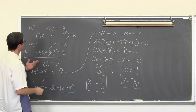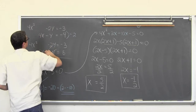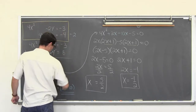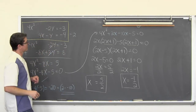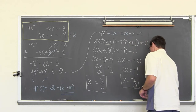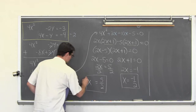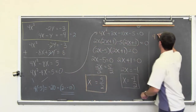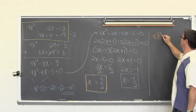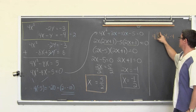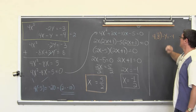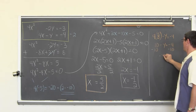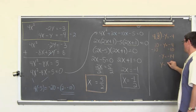We are going to plug those x values into one of the original equations. Using the second equation with x equals five halves: four times five halves minus y equals negative four. Four times five halves is ten, so ten minus y equals negative four. Subtracting ten from both sides: negative y equals negative fourteen, meaning y equals positive fourteen. So the first coordinate is five halves comma fourteen.